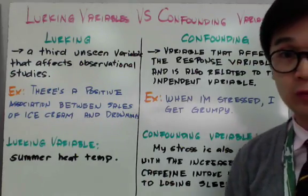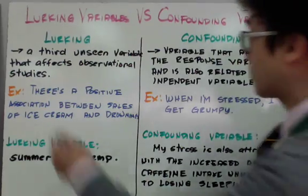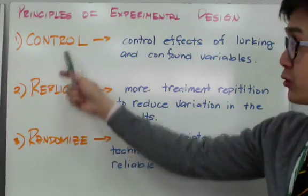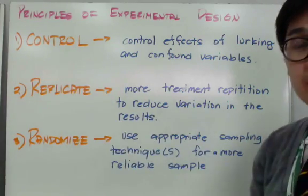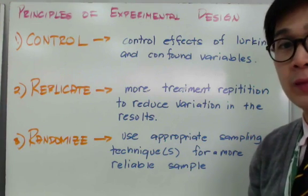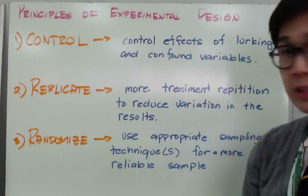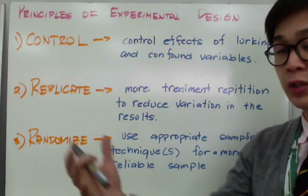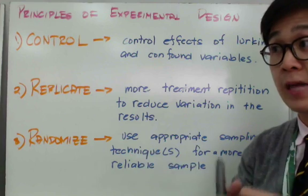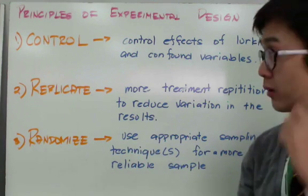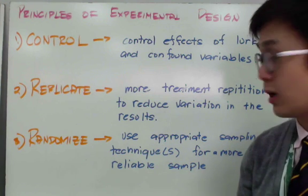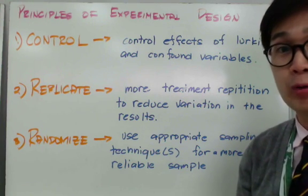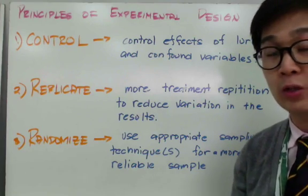The principles of good experiments require you to control, replicate, and randomize. To control means to avoid or eliminate confounding or lurking variables. To replicate means to have more participants or treatments in your sample, because the more samples you have, the less variability you'll have in your result. And to randomize means to use an appropriate randomizing or sampling technique, because in statistics it's important to have a reliable sample to get more reliable results.